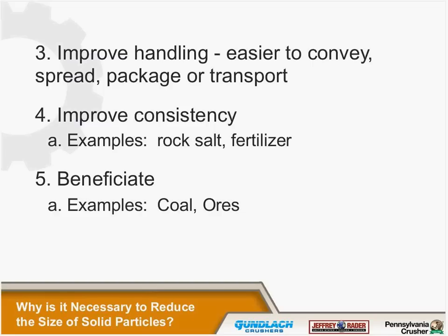We also want to improve the handling — make it easier to convey and load. For example, we might crush coal before putting it in a rail car to fit more material. We wish to improve consistency, such as with fertilizers or road salt, where large lumps would burn a lawn or be ineffective. Or we wish to beneficiate the material, crushing coal to separate uncrushables or ash through screening or washing, and similarly with ores.